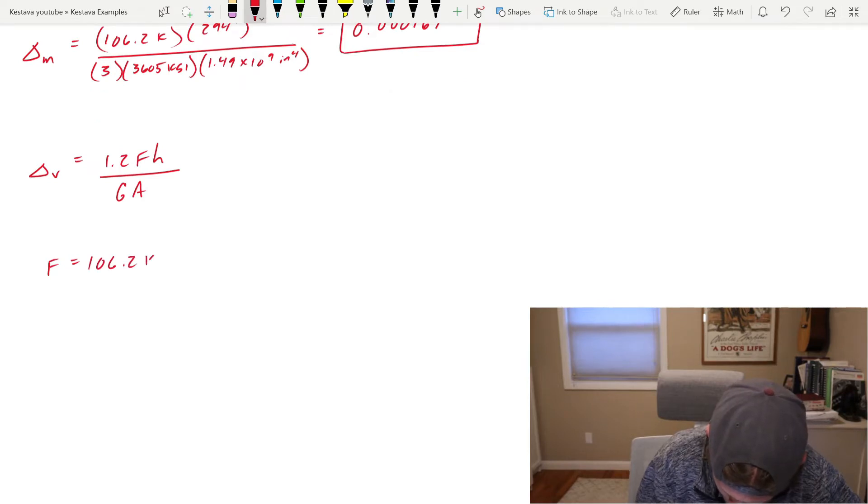F is 106.2 kips, we already know that. H is 24.5 feet, converted to inches is 294 inches.